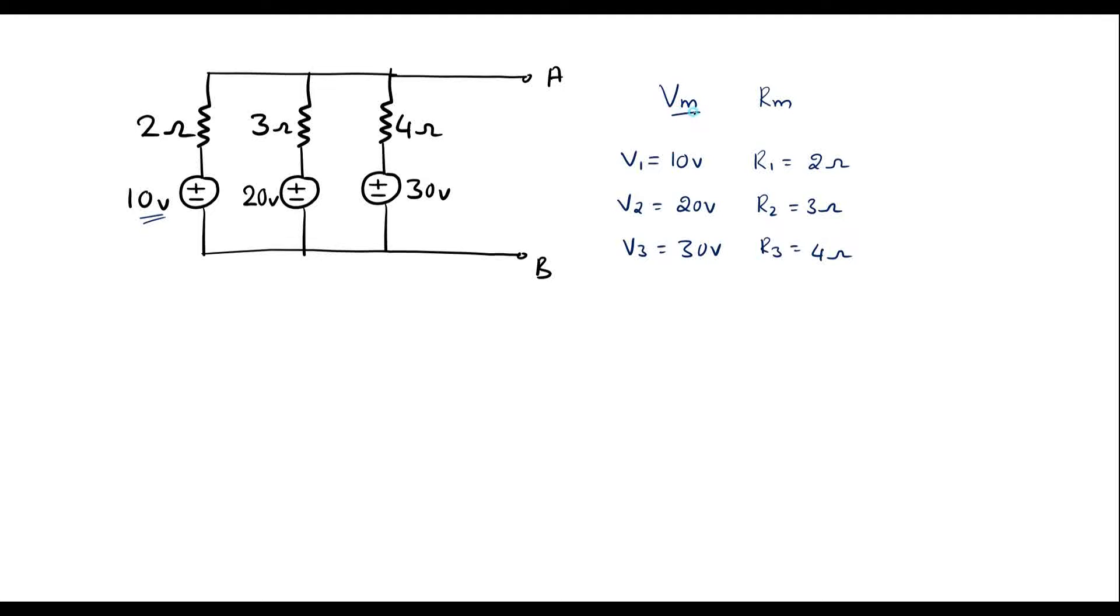First, let me calculate Vm. Vm is calculated using the formula: Millman's voltage equals V1G1 plus V2G2 plus V3G3, divided by G1 plus G2 plus G3.